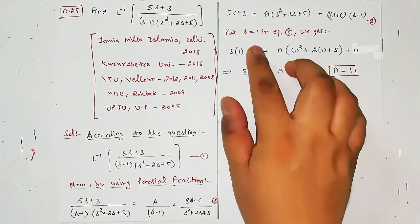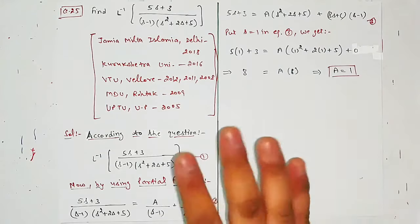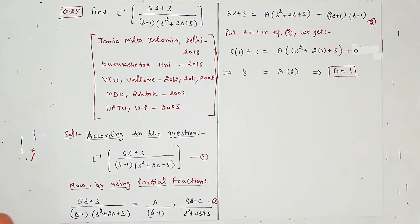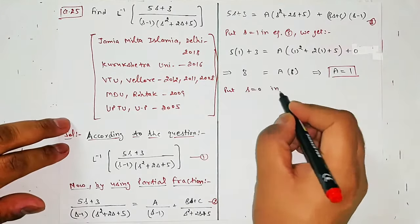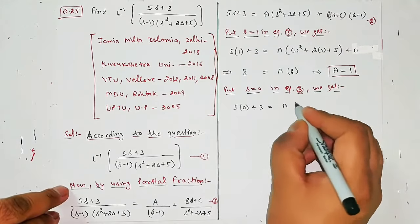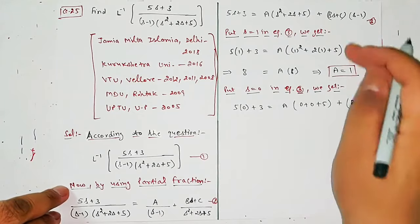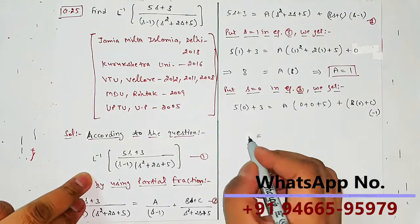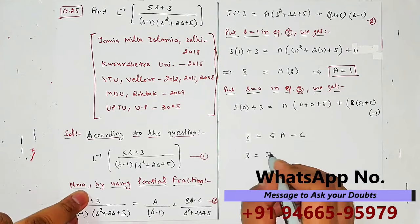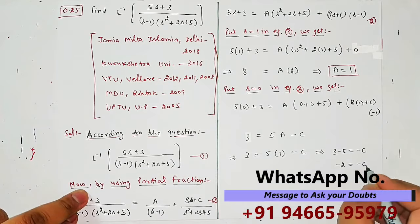Now since there is only one linear factor, I cannot identify any other special S value. For the remaining two constants B and C, I will put values of my choice. The best option is put S = 0. So 5×0 + 3 = A(0 + 0 + 5) + (B×0 + C)(0 - 1). This simplifies to 3 = 5A - C. Since A = 1, we get 3 - 5 = -C, so -2 = -C, giving C = 2.